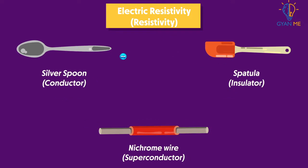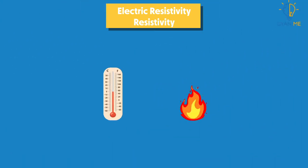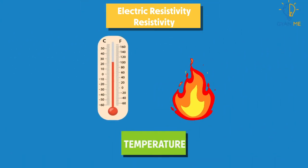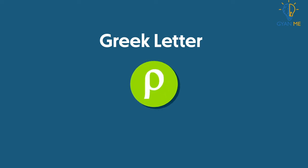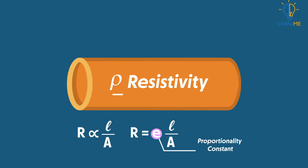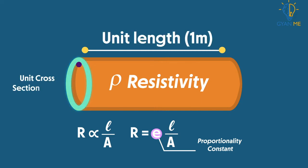We can say that resistivity is a property of the material itself, not the size or shape of the sample. Resistivity usually depends on temperature and may depend on other quantities such as pressure. We symbolize it by the Greek letter Rho. In our last video, we studied that resistivity is the proportionality constant, or the resistance of a wire of unit length and unit cross-sectional area of a given material.